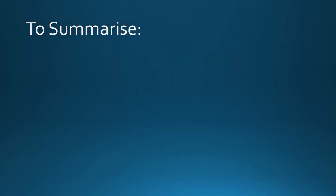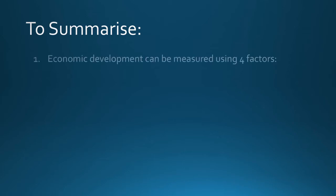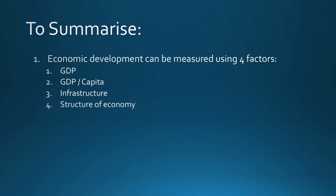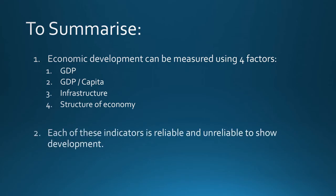Let's quickly summarize what we have learned in this video. First, economic development can be measured using four indicators: GDP, GDP per capita, infrastructure, and the structure of the economy. Secondly, each of these indicators is both reliable and unreliable at indicating development in a country. That's it for this video — thank you for watching. I hope you found the content enjoyable and educational.